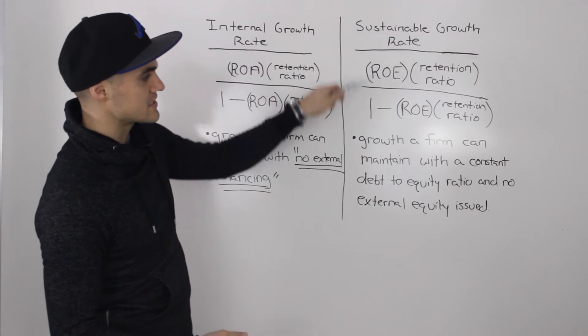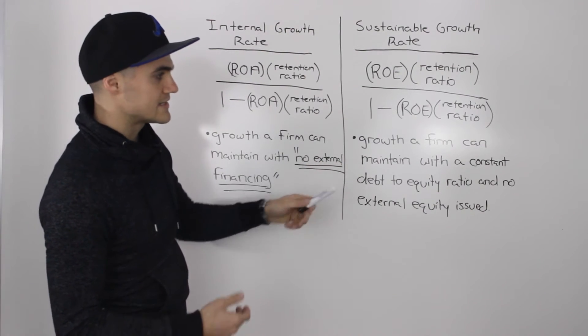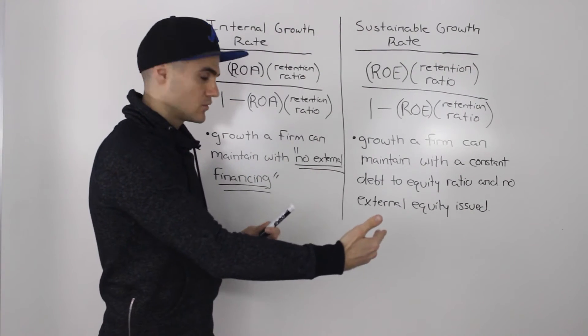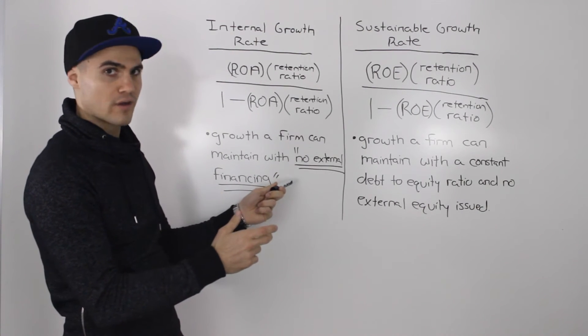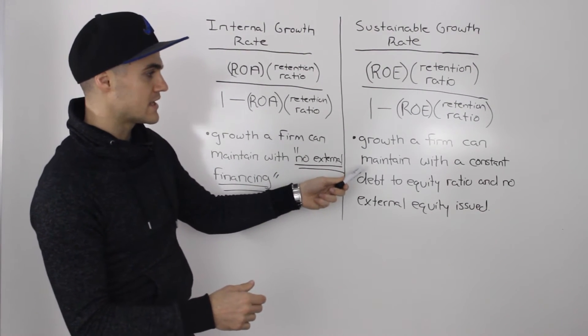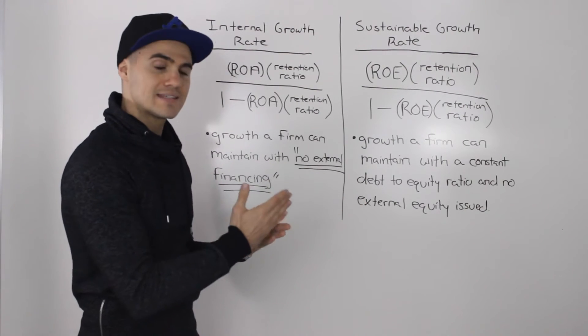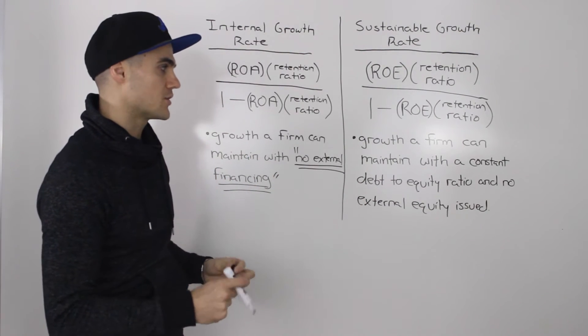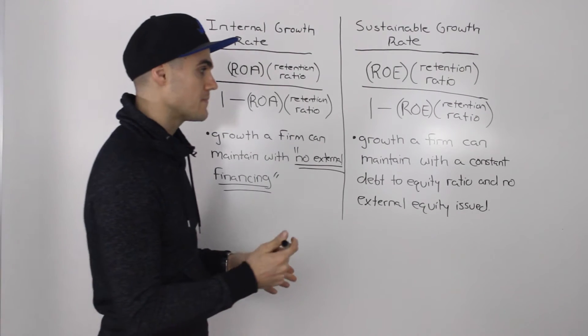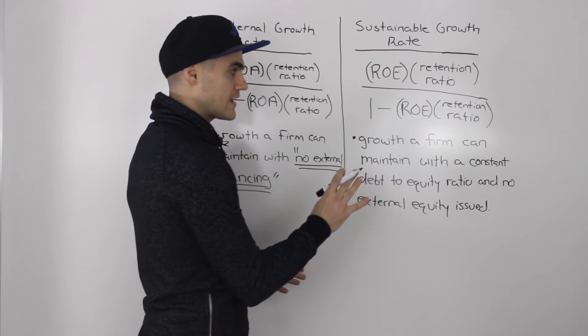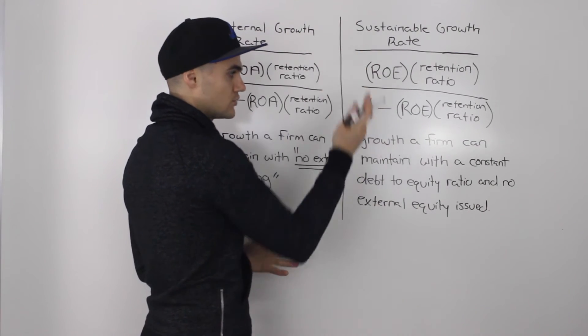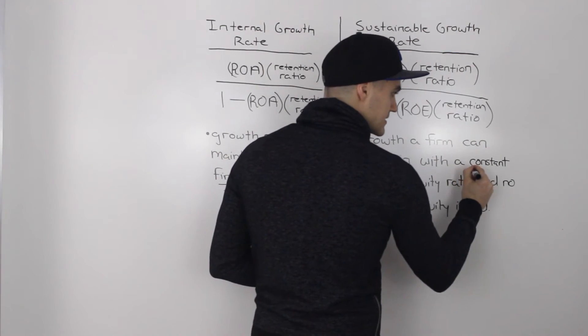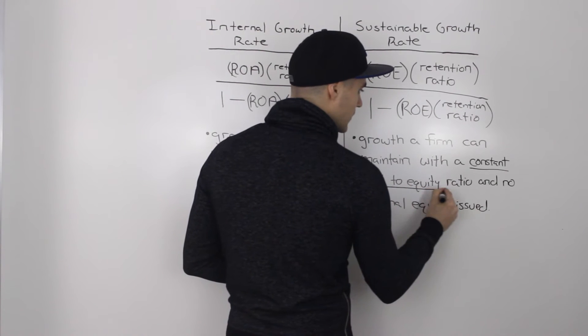However, when we're dealing with the sustainable growth rate, we can take on more debt, which we can't do here because debt is a form of external financing. We could take on more debt as long as we're maintaining a constant debt to equity ratio. And we've done examples showing that. So the phrase that you want to look for that will trigger you knowing that you're using the sustainable growth rate is this constant debt to equity ratio.